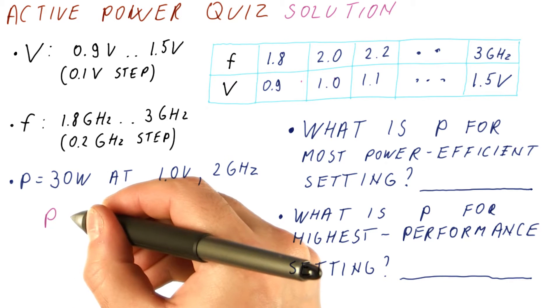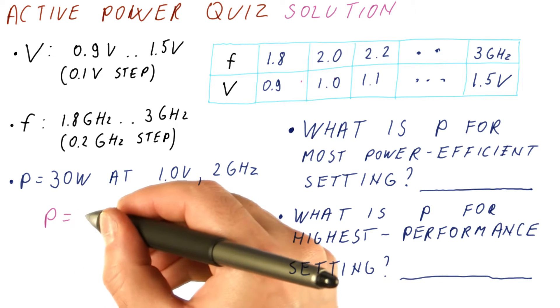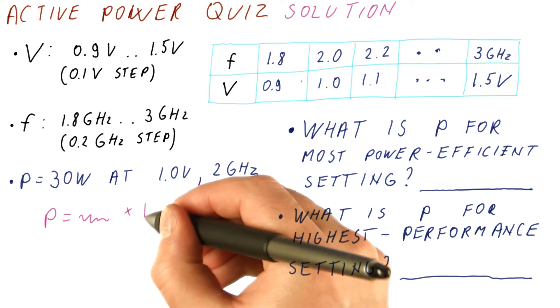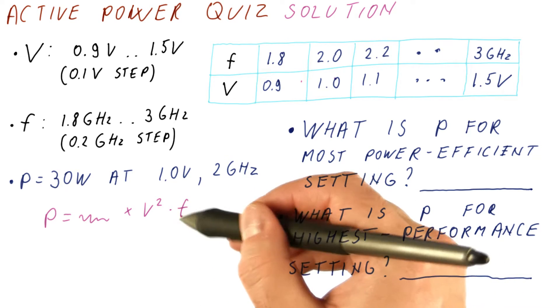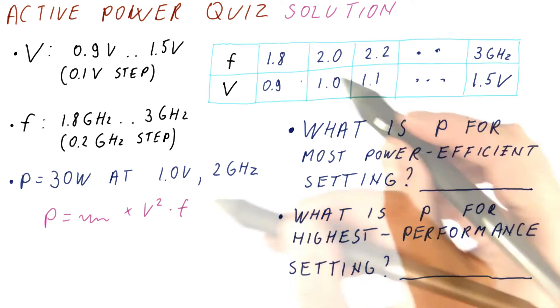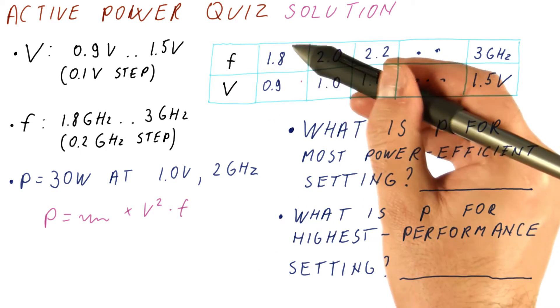Why? Because the power, if you remember, is equal to something times voltage squared times frequency. So to reduce power, we need to both lower the frequency and reduce voltage, so our most power efficient setting is this one.